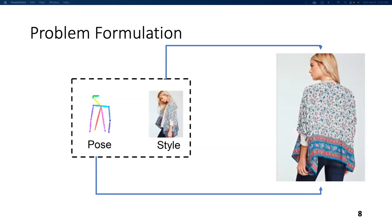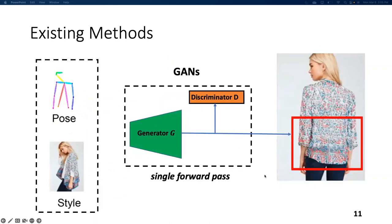These are the requirements. In the existing literature, this pose-guided image synthesis problem is usually handled through GANs, which transfer the source style to the given pose in a single forward pass. However, it becomes quite challenging as the model struggles to preserve the source appearance in complex scenarios — as you can see here, the pattern on the shirt does not match exactly with the given style pattern.